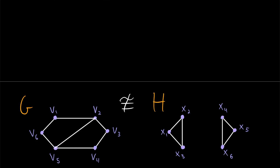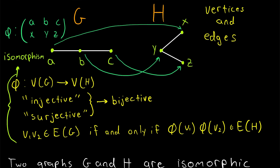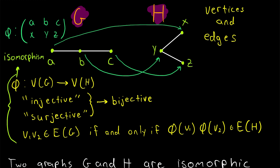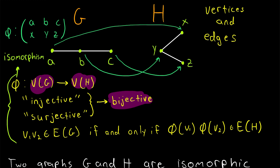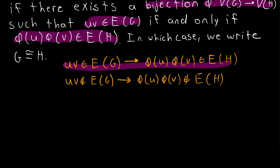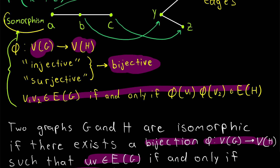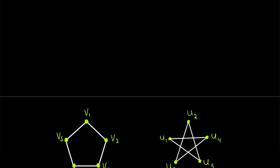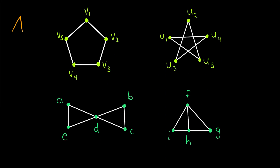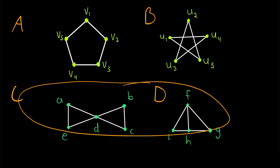Let's recap the definition one more time. Two graphs G and H are said to be isomorphic if there exists a function phi from the vertices of G to the vertices of H that matches their vertices up in a one-to-one correspondence — meaning it is a bijective function — and the function preserves adjacency and non-adjacency. Such a special function between graphs is called an isomorphism. Here is an exercise: here are four graphs A, B, C, and D. Let me know in the comments if you think either pair — A and B, or C and D — are isomorphic.